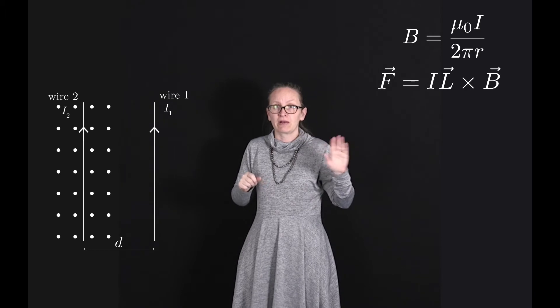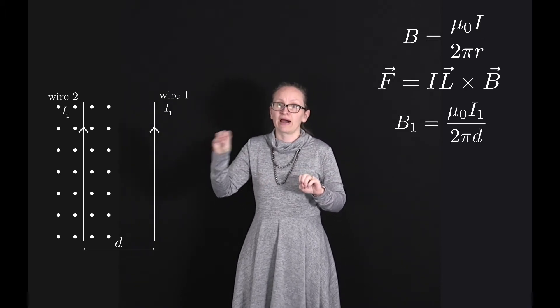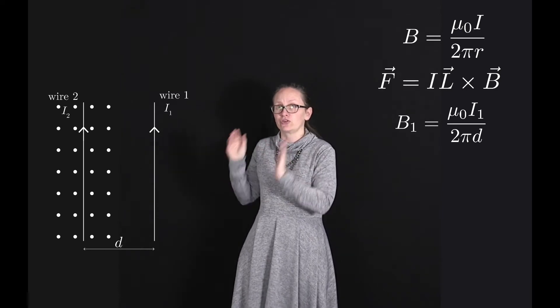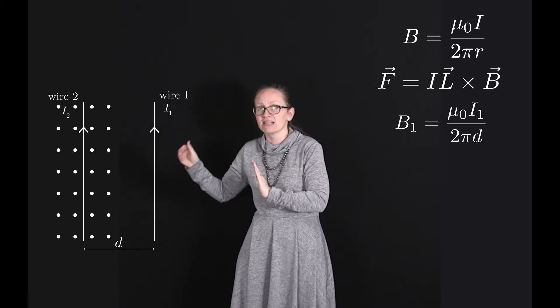So we can write B₁ equals μ₀i₁ divided by 2πd. So this is the strength of the magnetic field due to the current in wire 1 at wire 2.